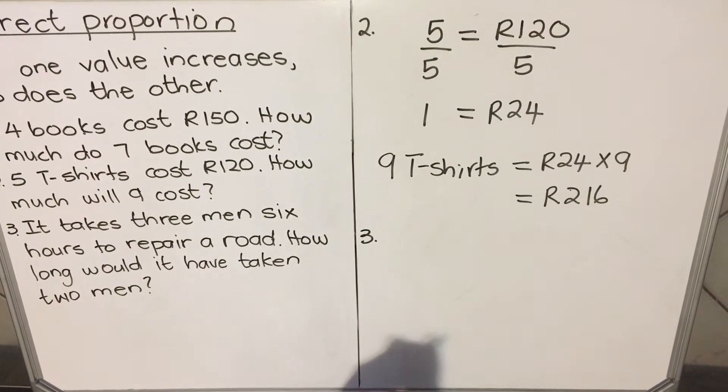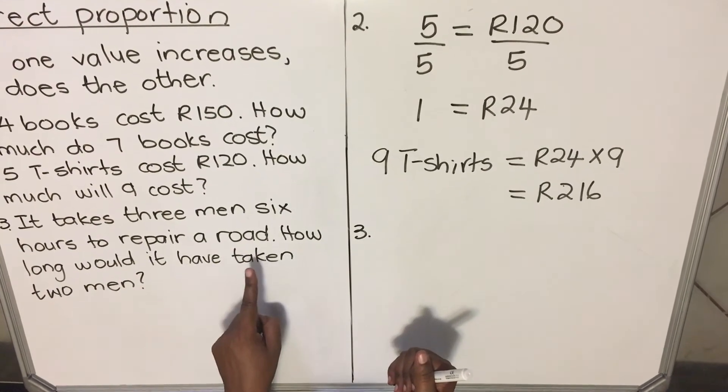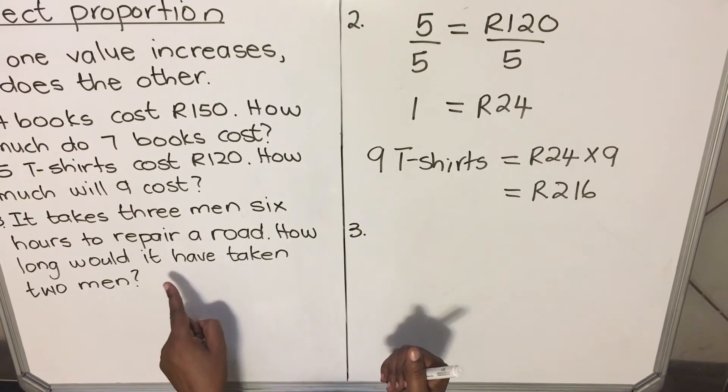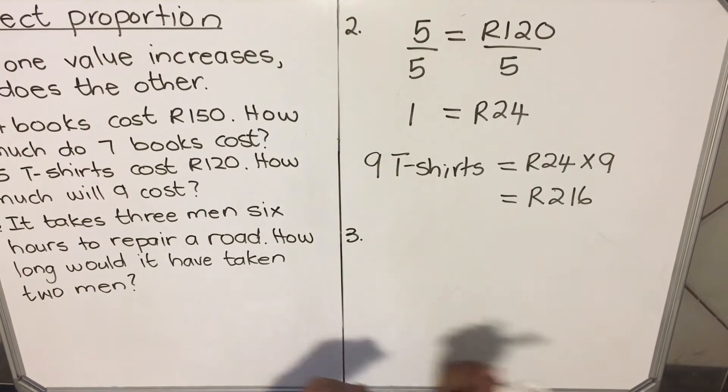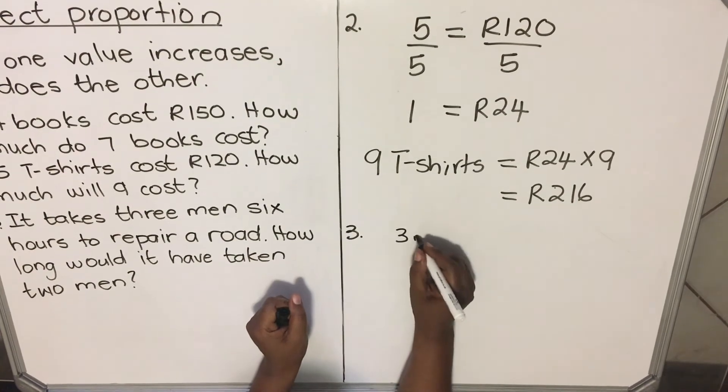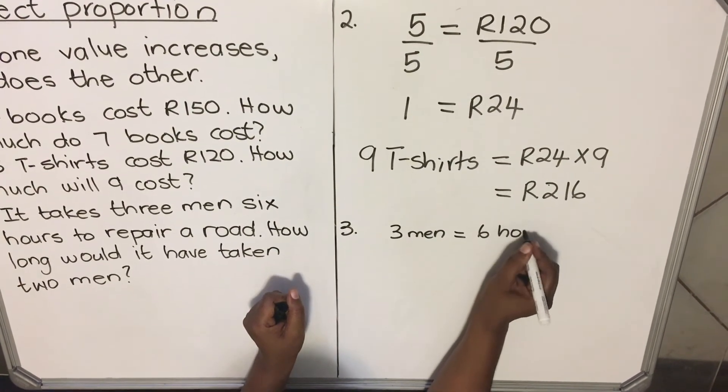Let's get the third question. Number three. It takes three men six hours to repair a road. How long would it have taken two men? So three men, they took six hours to repair the road.